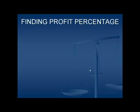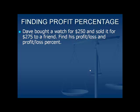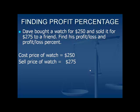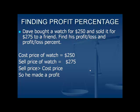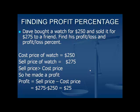Finding profit percent — let us see an example. Dave bought a watch for $250 and sold it to a friend for $275. Let us find the profit or loss and the percent loss or profit. The cost price of the watch is $250 and the selling price is $275. The selling price is more than the cost price, so there is a profit. The profit is calculated by subtracting the cost price from the selling price: $275 minus $250 equals $25. Profit percentage is equal to $25 divided by the cost price $250, multiplied by 100, which is equal to 10%.